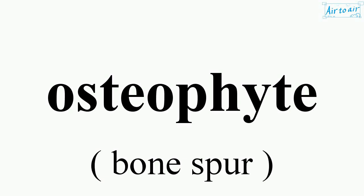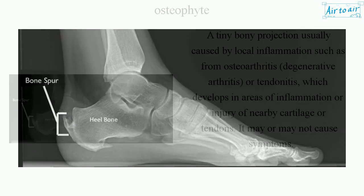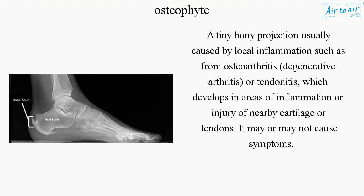Osteophyte: a tiny bony projection usually caused by local inflammation, such as from osteoarthritis, degenerative arthritis, or tendonitis, which develops in areas of inflammation or injury of nearby cartilage or tendons. It may or may not cause symptoms.